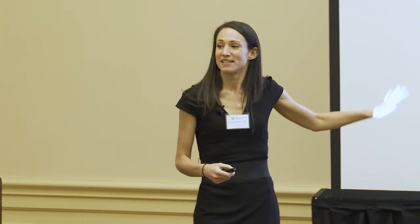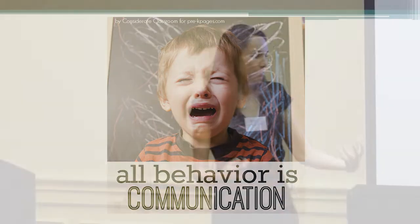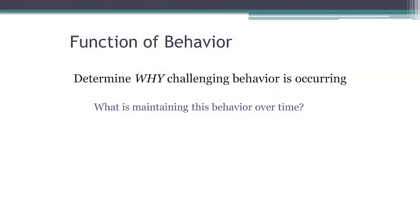The essence of ABA's approach to challenging behavior is this: challenging behavior is not a symptom directly of autism. It's not something bound to happen because of the disability, but rather because of communication difficulties. Therefore, we're using challenging behavior as a form of communication — looking for the message in the behavior. So we're determining why this behavior is occurring and why it's continuing to occur over time, looking at particular environmental variables that might be contributing to the maintenance of this behavior.